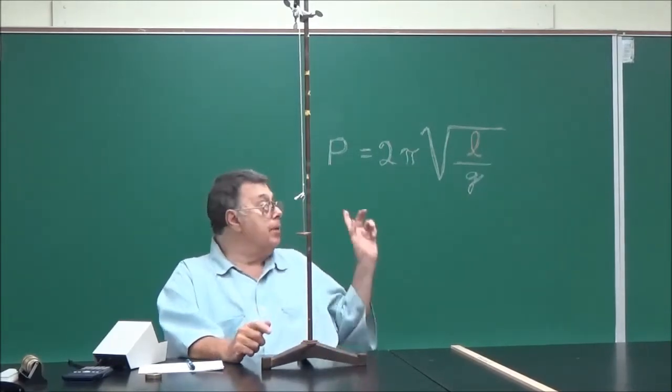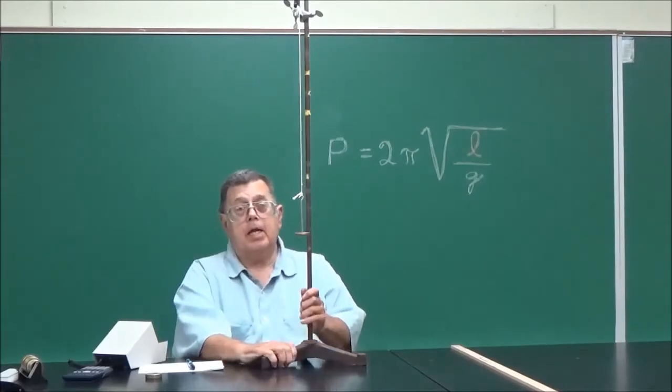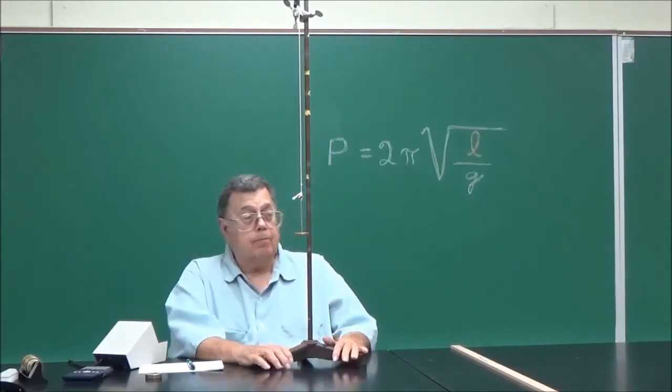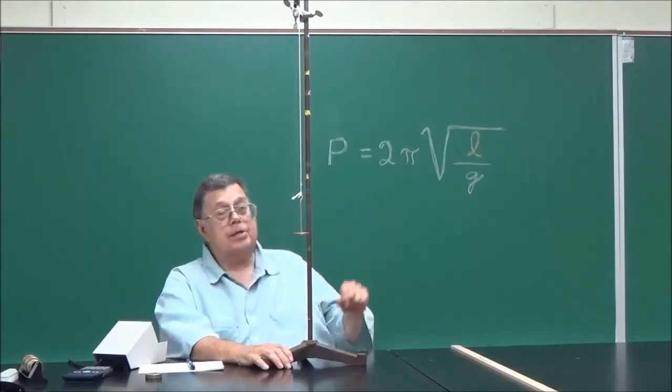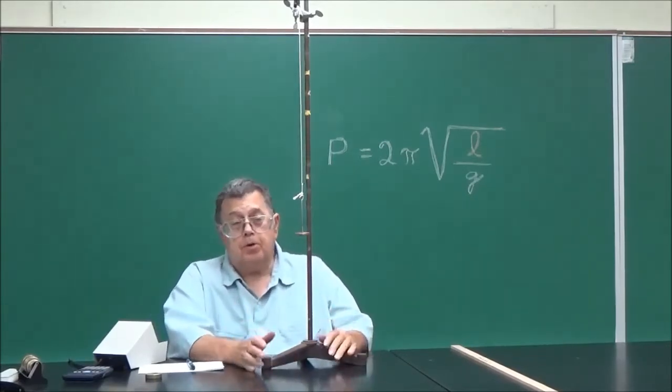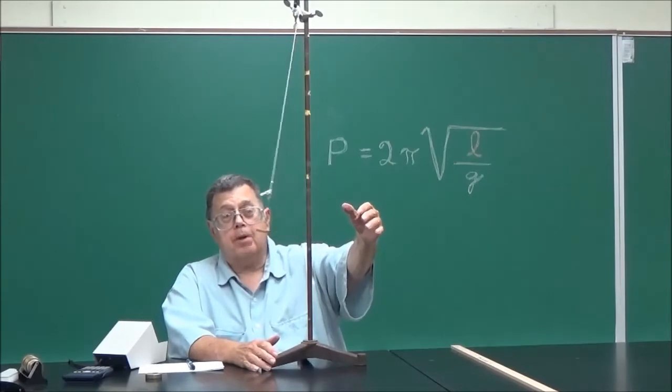The formula behind me was determined by Galileo about 400 years ago, and involves only the length of the pendulum as determining its period, which is the time it takes to swing back and forth.